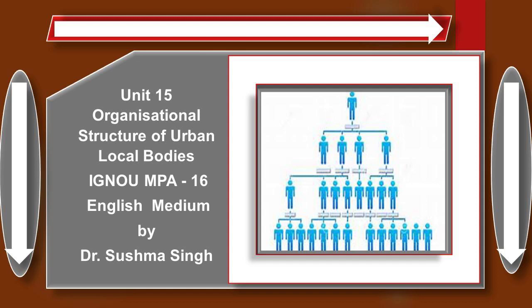Local self-government implies the management of local affairs such as water supply, drainage, primary education, maintenance of roads, etc. The goal to be aimed at is the betterment and welfare of every citizen. Local self-government is a system under which the people of a locality possess a certain responsibility for public local affairs and in the raising of money to meet their expenses.